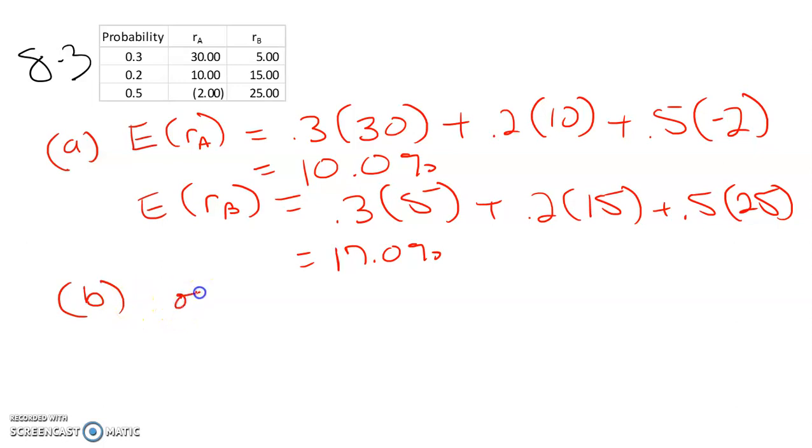So sigma squared A is 0.3 times 30 minus 10 squared. We've got the 30% return here, and then minus the expected return. Square that plus 0.2 times 10 minus 10 squared,